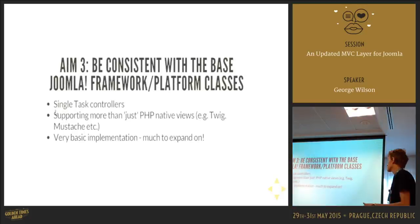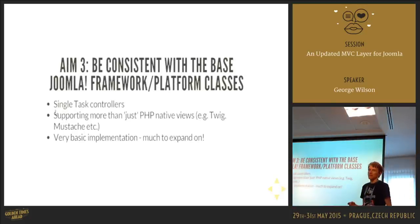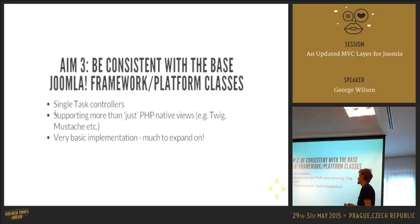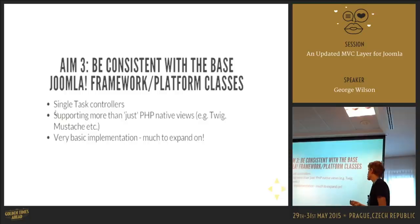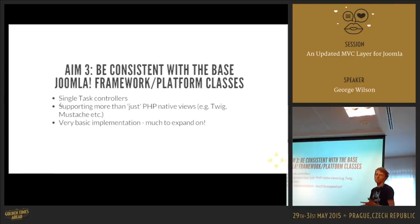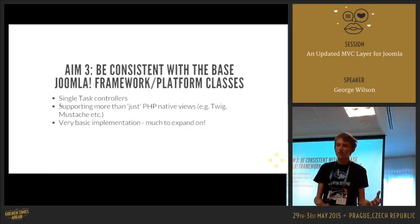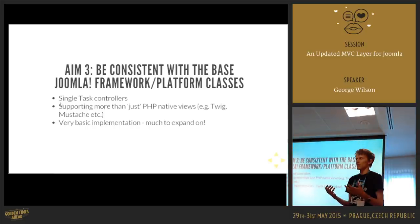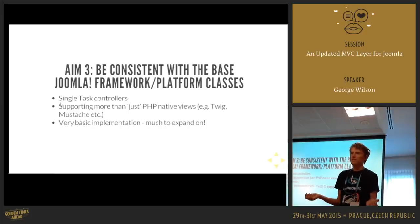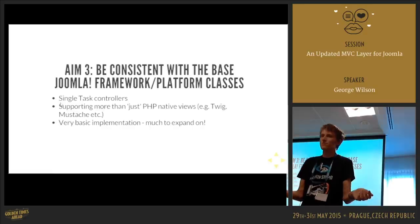Aim three: when we moved to the framework and platform, people started work on this but it never really got too far. We came up with base classes, made the decision to go for single-task controllers, and Michael came up with a nice renderer class that could support things like Twig and Mustache, giving you better data injection into your views and better separation of logic. However, the framework and platform are supposed to be reusable outside of Joomla — they're very light and don't give the CMS what it needs for an average extension developer.